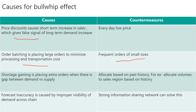This again causes demand distortion. The countermeasure is frequent ordering of small sizes — every day, customers place only small orders based on realistic demand. The next cause is shortage gaming: placing extra orders when there is a gap between demand and supply.